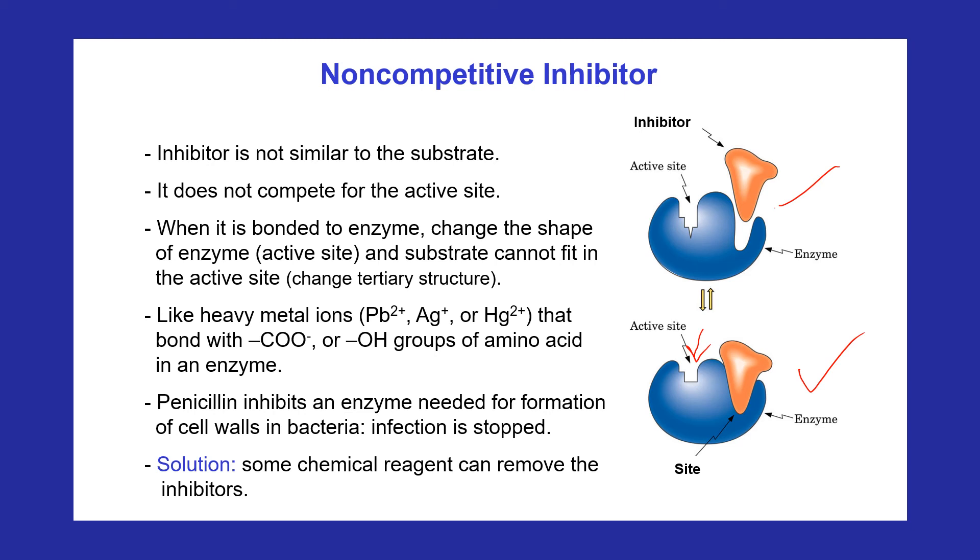Examples of non-competitive inhibitors are the heavy metal ions like lead, silver, and mercury that bond with amino acids containing side groups such as carboxylic group or hydroxyl group in their side chain. Catalytic activity is restored when chemical reagents remove the inhibitors. Antibiotics produced by bacteria, mold, or yeast are inhibitors used to stop bacterial growth.